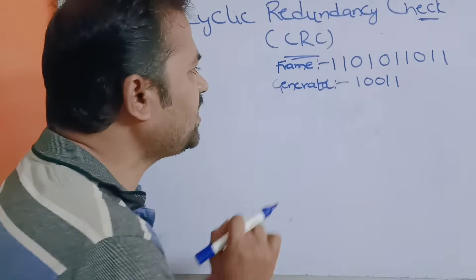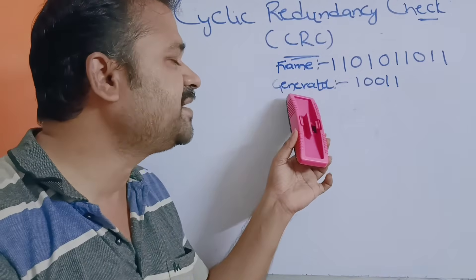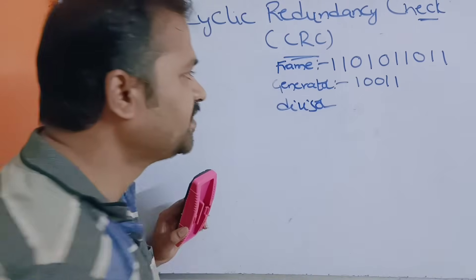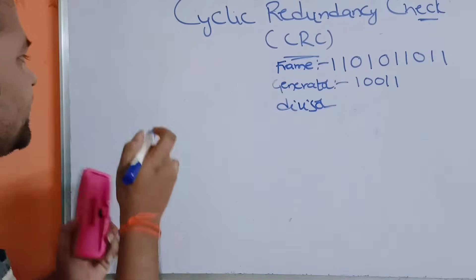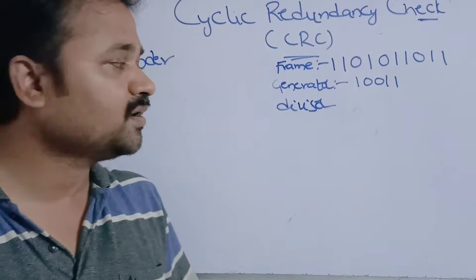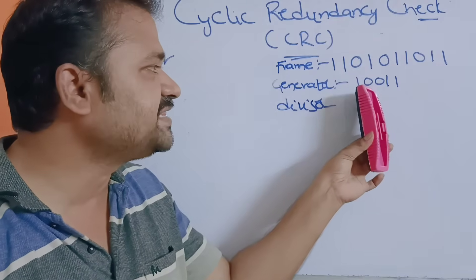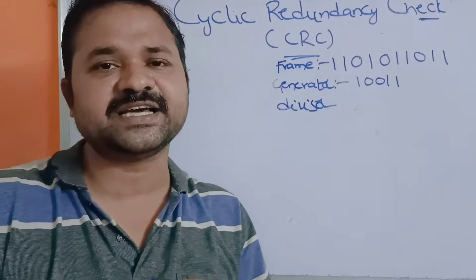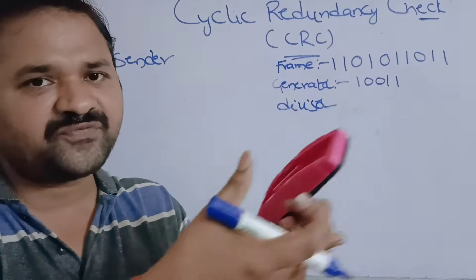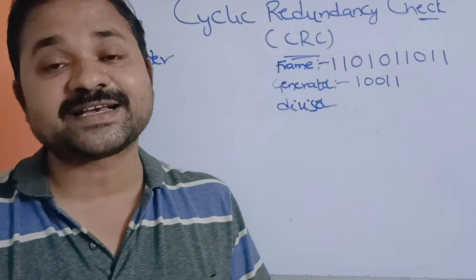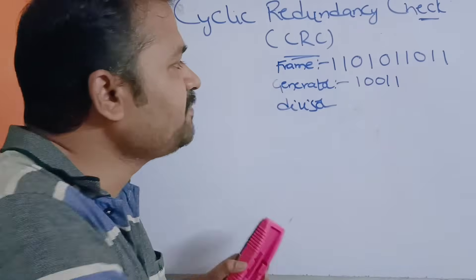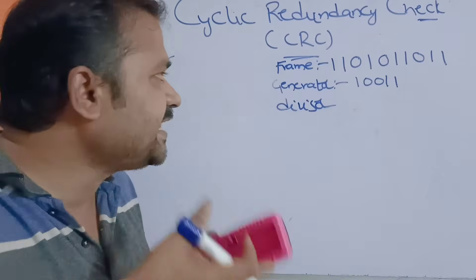Here we have the frame (the message) and the CRC generator. The generator is nothing but the divisor, and the size of the divisor is 5 bits. At the sender side, we perform a division operation — the divisor is the CRC generator and the dividend is the frame or message. After performing the division operation, we get some remainder. The sender appends that remainder to the frame and sends the message to the receiver.